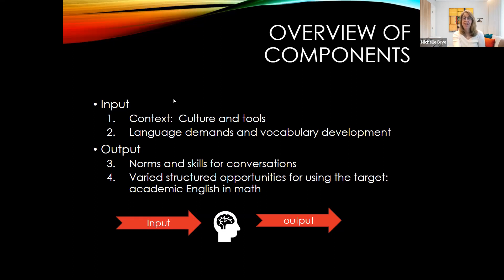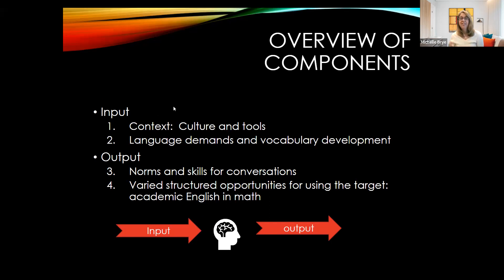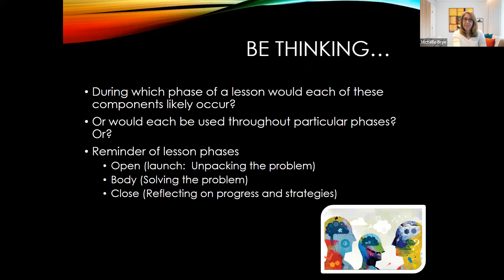Here's an overview of the components. When we look at the first one in input, it's the context — the culture and tools that go into creating the context for learning. The second part of input is language demands and vocabulary development. Then there are two components of output: norms and skills for conversations — how do we set those up in the classroom? — and varied structured opportunities for using academic English and mathematics.